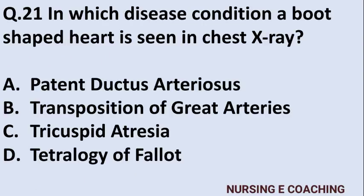Question 21: In which disease condition is a boot-shaped heart seen in chest X-ray? Option A: patent ductus arteriosus, Option B: transposition of great arteries, Option C: tricuspid atresia, Option D: tetralogy of Fallot. Answer is D — tetralogy of Fallot. Boot-shaped heart is seen in tetralogy of Fallot on chest X-ray.